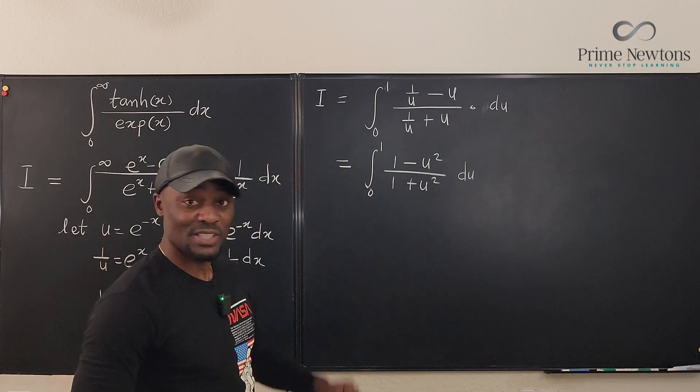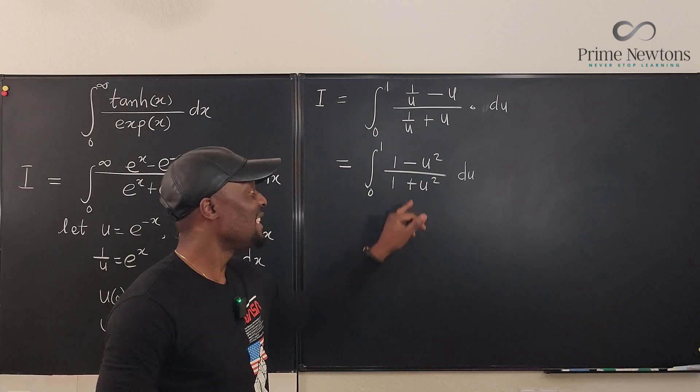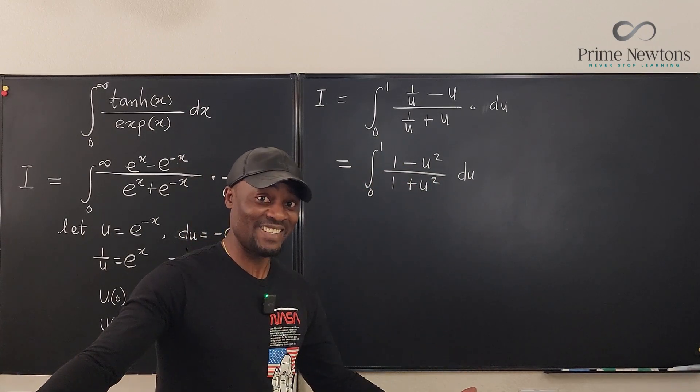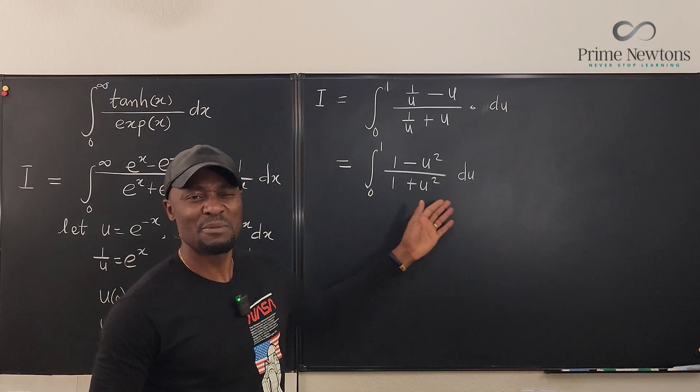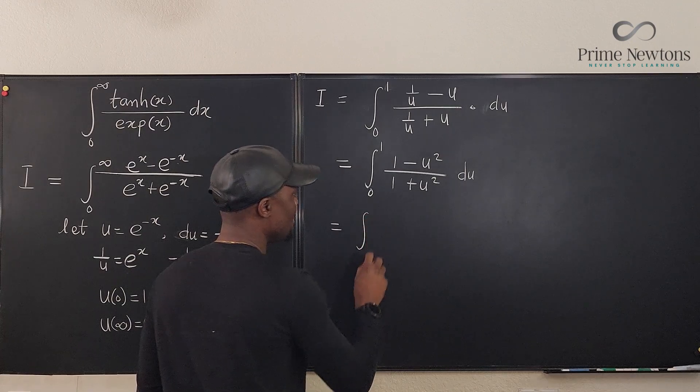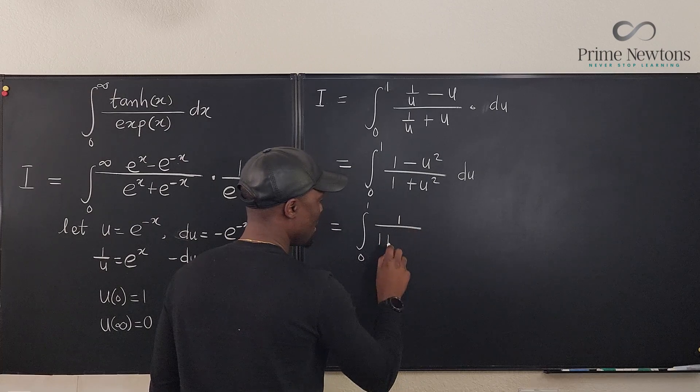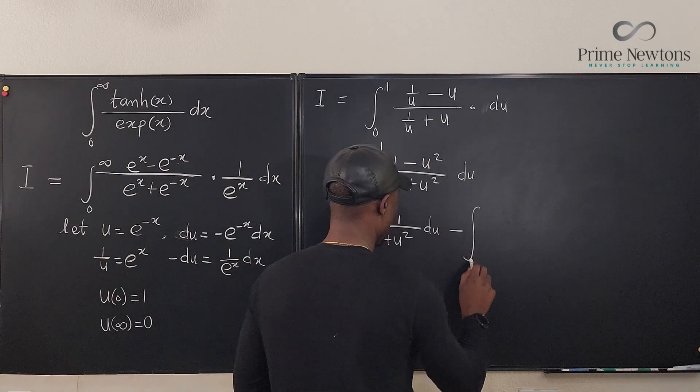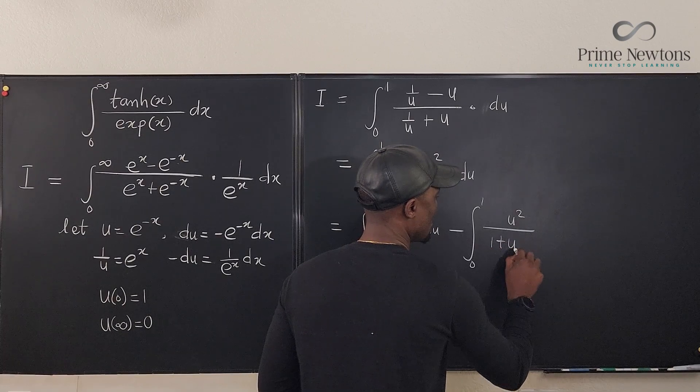So what do I do here? Whenever you have a rational expression, remember that the degree of the top must be less than the degree of the bottom for you to be able to integrate. If it is not, you have to simplify. Do long division, synthetic division, or just do manipulation as I'm going to do now. This is the same thing as the integral from zero to one of one over one plus u squared du minus the integral from zero to one of u squared over one plus u squared.